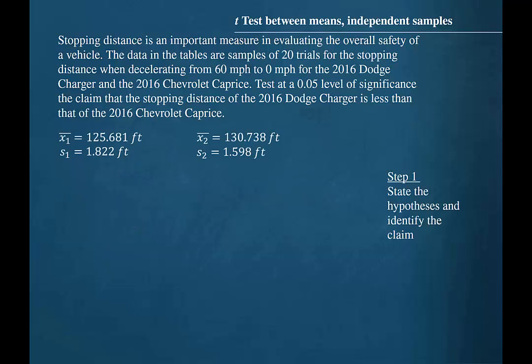Step 1 is to state the hypotheses and identify the claim. The claim is that the stopping distance of the 2016 Dodge Charger is less than that of the 2016 Chevrolet Caprice. Remember that the null hypothesis always contains the equal sign. So the claim will be in the alternative hypothesis, which will be mu1 less than mu2.